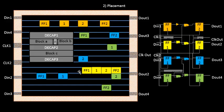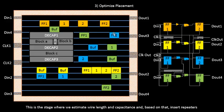The next step is optimized placement. In this stage, we estimate wire lengths — for example, the wire length from DIN2 to flip-flop 1 — and based on that estimation, we identify the potential signal degradation. Based on the degradation, we insert repeaters. Repeaters are signal conditioners: they take the signal from DIN2, condition it, reconstruct the original signal, and send it ahead.